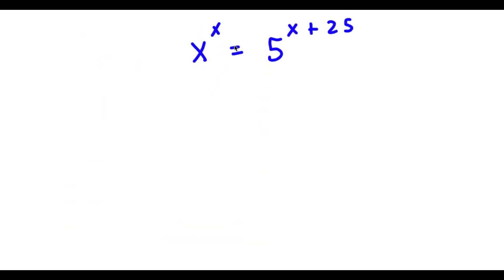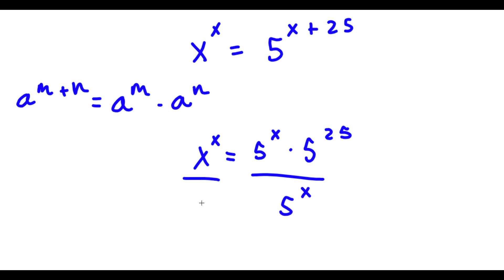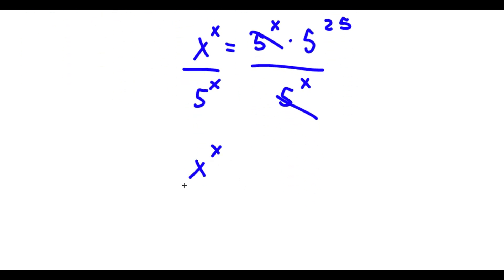Alright, so I have x to the power of x equals 5 to the power of x plus 25. To solve this, I'm going to use the exponent rule which states that a to the power of m plus n equals a to the power of m times a to the power of n. So 5 to the power of x plus 25 equals 5 to the power of x times 5 to the power of 25. Now I can divide both sides by 5 to the power of x — these cancel out — and I'm left with x to the power of x over 5 to the power of x equals 5 to the power of 25.